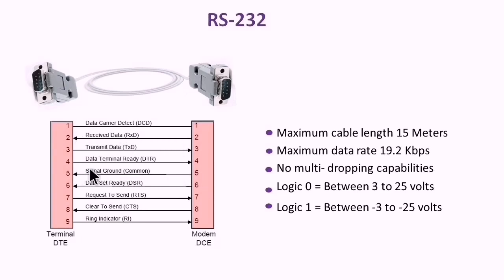RS-232 is not intended for long distance communication. Depending on the baud rate in bits per second, it can go to a maximum of 15 meters. The maximum data rate that can be achieved with this link is 19.2 kilobits per second.